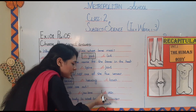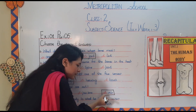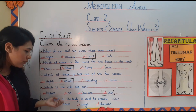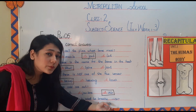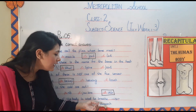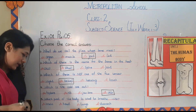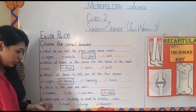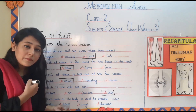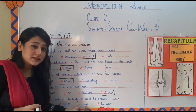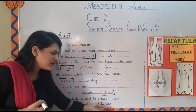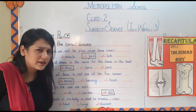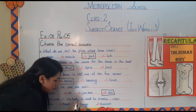Number four asks which is the odd one out among bones. Jaw bone is also a bone, but skin is not a bone — so the odd one out is skin. The last question: which part of the body is used to breathe with? We breathe through our lungs, not the brain, heart, or stomach. The answer is lungs.